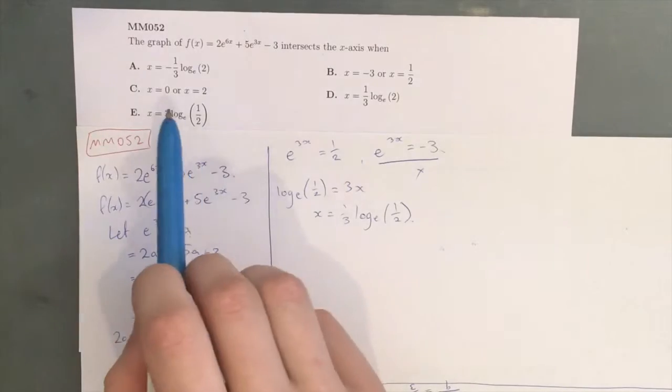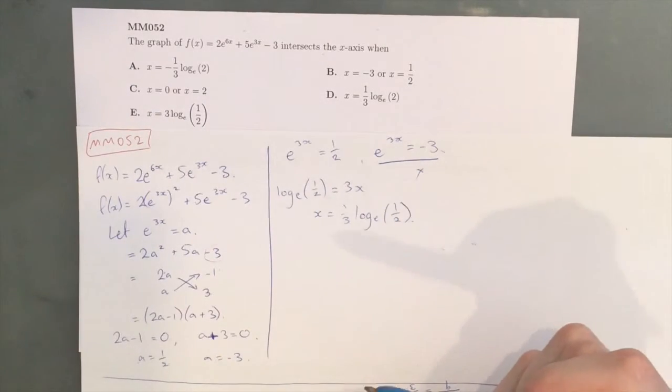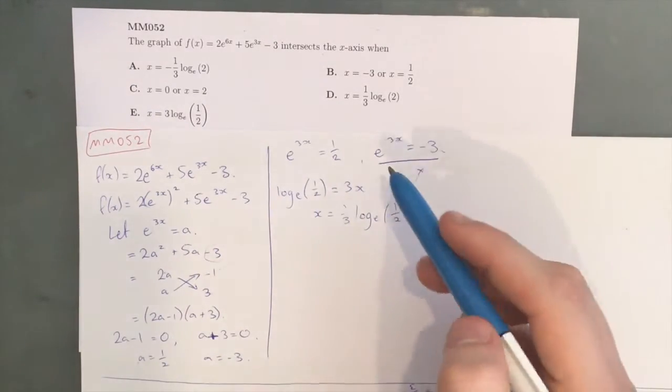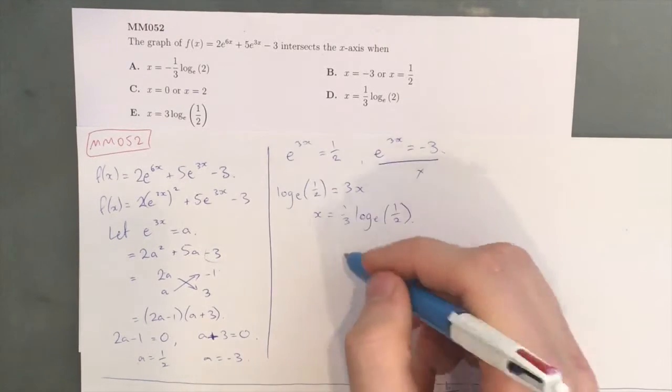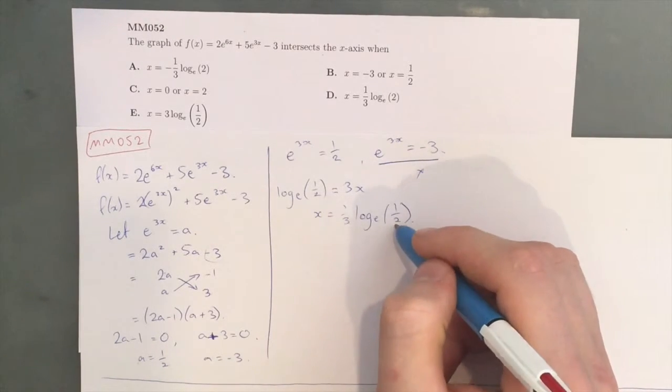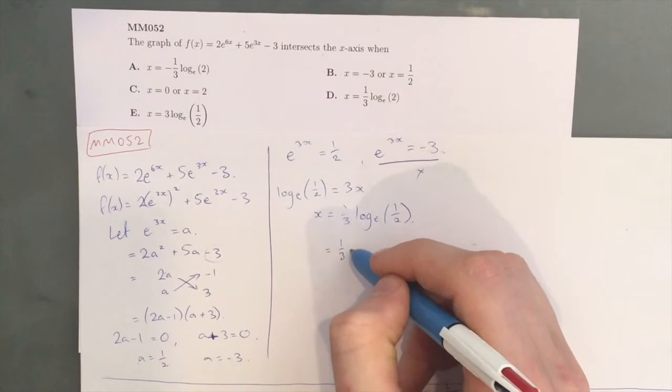Which is actually not on any of our answers. However, it is in a different form. So, 1/2 is equal to 2^(-1).